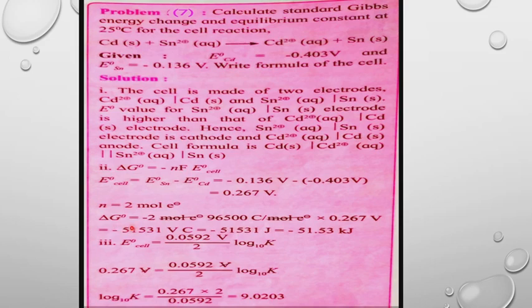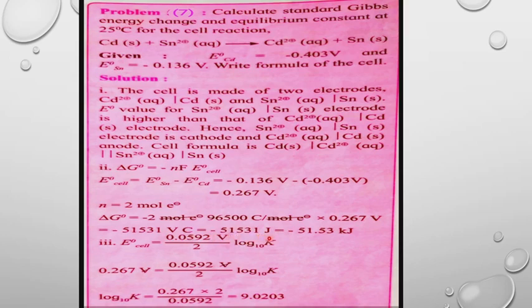Substituting into ΔG° = −nFE°_cell: ΔG° = −2 × 96,500 × 0.267 = −51,531 J = −51.531 kJ, obtained by dividing by 1000. So the standard Gibbs energy change is −51.53 kJ.